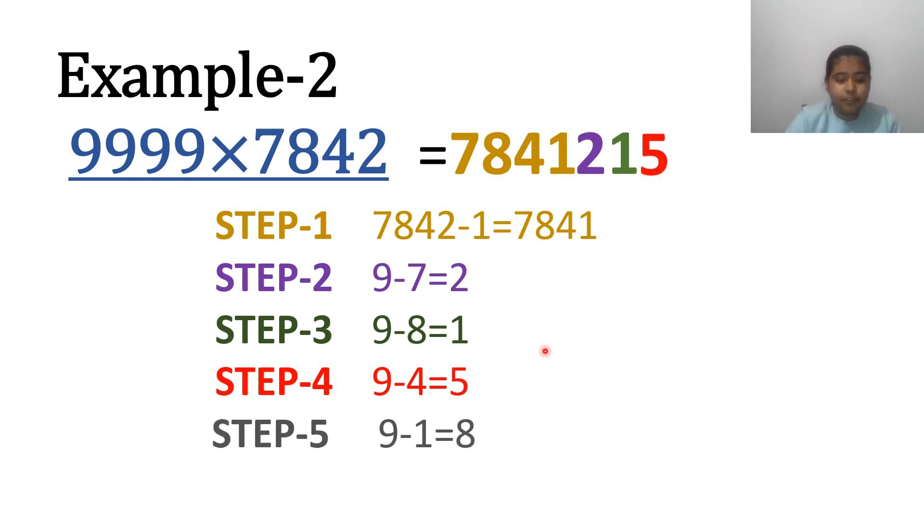Step 5. Now, take the last 9 and subtract 1. We get 9 minus 1 equals 8. Write it down after 5. So, 7,842 multiplied by 9,999 we get 78,412,158.